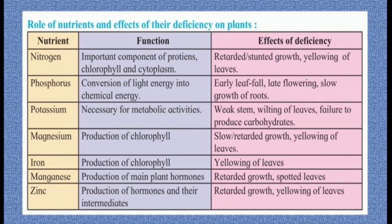Look at the table: Role of Nutrients and Effect of Their Deficiency on Plants. First, nitrogen — it is an important component of proteins, chlorophyll, and cytoplasm. Deficiency effects: retarded growth and yellowing of leaves. Second, phosphorus — its function is conversion of light energy into chemical energy. Deficiency effects: early leaf fall, late flowering, and slow growth of fruits. Third, potassium — it is necessary for metabolic activities. Deficiency effects: weak stem, wilting of leaves, and failure to produce carbohydrates.